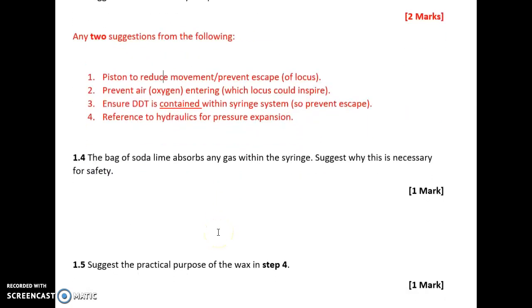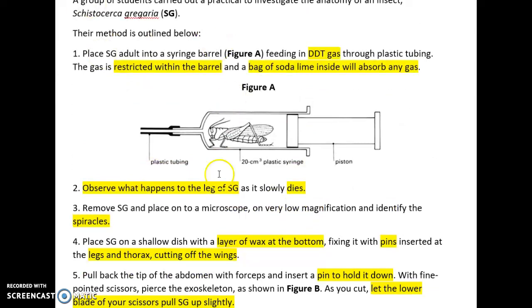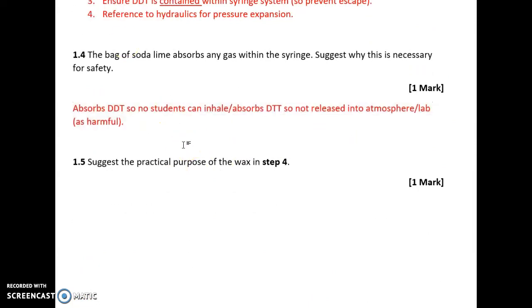The bag of soda lime absorbs any gas within the syringe. Suggest why this is necessary for safety. DDT is fed in, it kills the insect, and whatever is left needs to be absorbed. DDT is killing the insect and we don't want to die either. The bag of soda lime will prevent DDT being released into the atmosphere or where you're working, so the students cannot inhale any of the gas. The bag of soda lime absorbs DDT so it's not released into the lab.